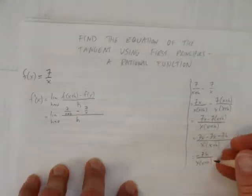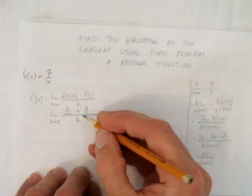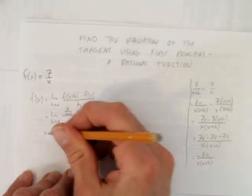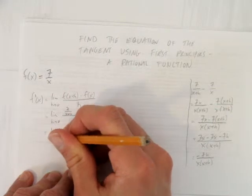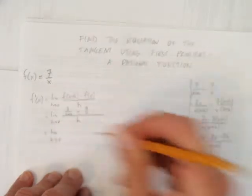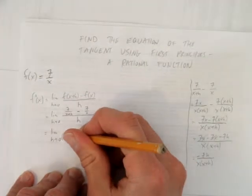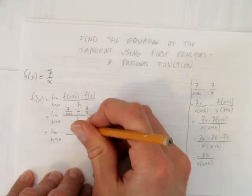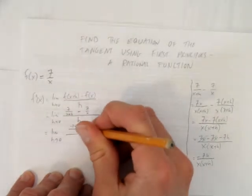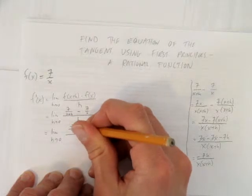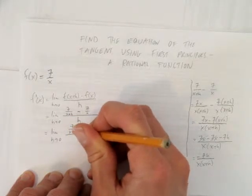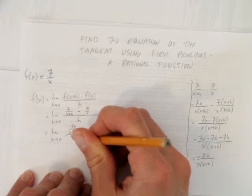Great. So that work on the side was just so I didn't have to keep writing the whole big fraction each time. Saves me a bit of writing. So now I have the limit as h approaches 0 of negative 7h over x, x plus h, and all that is over h.